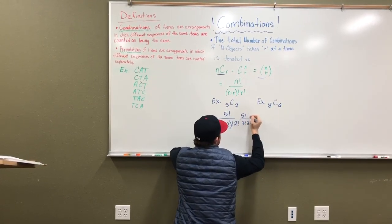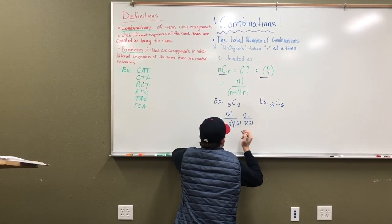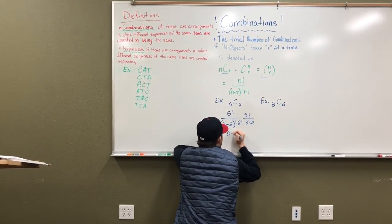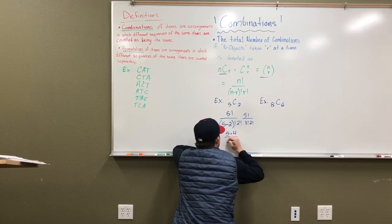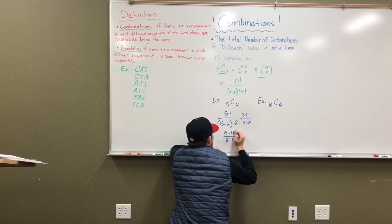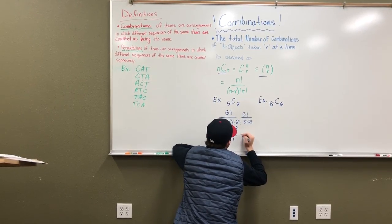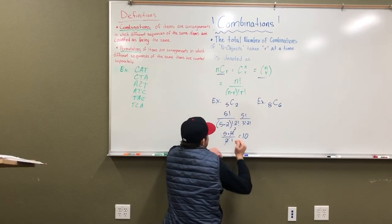So see here, we can cross out the three, two, and one on the five factorial. So we'll have five times four and then we'll have two times one. Simplify, so that makes it ten. So for five choose two, we would have ten.